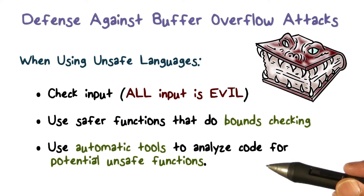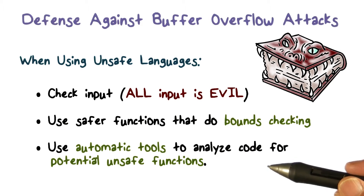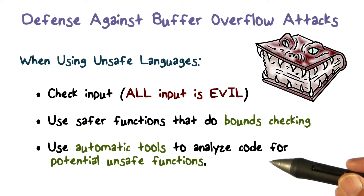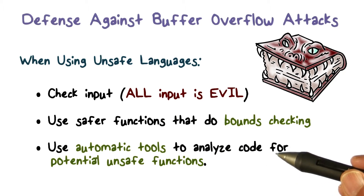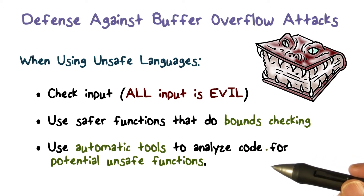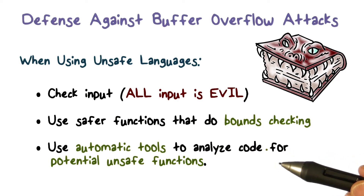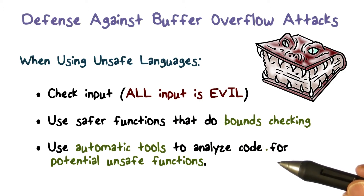You should be checking your input. You should be using safer functions that do that checking automatically. And then you should run your code through these tools that can flag potential problem spots, and you should go back and look at how you can actually make those potential vulnerabilities go away.